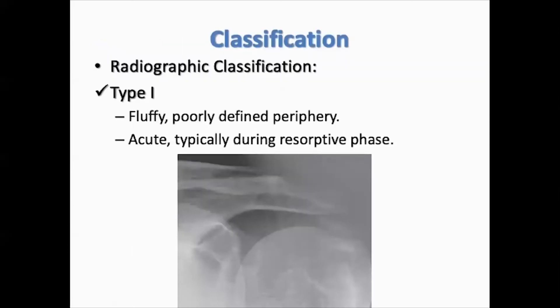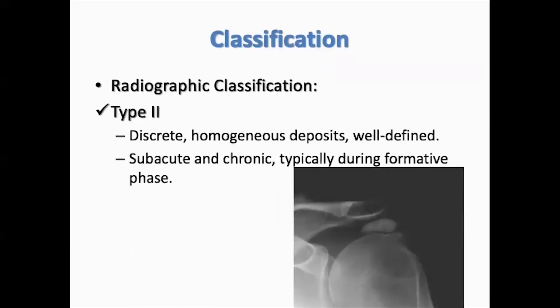Radiologically, the condition can be classified into two types: type 1, the fluffy, poorly defined periphery; and type 2, the discrete, homogenous, well-defined deposits.